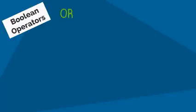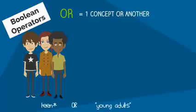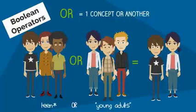OR is useful when it doesn't matter which concept shows up in your results, as long as one concept is included. For example, searching for teenagers OR young adults will likely provide information on similar types of people, even though you're using different terms.